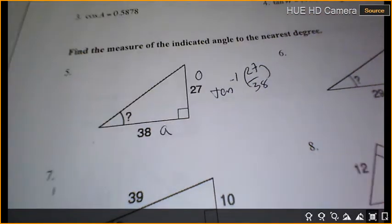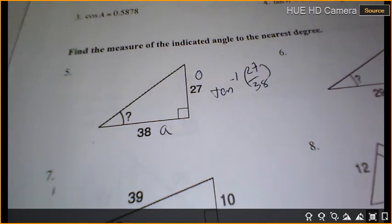So I hit my trig button, tan of negative 1. 25 divided by 38 gives me? Oops. Make sure you use inverse tan, because I just did tan by accident and gave me a decimal. I get 35.4, so I'll just say 35 degrees.